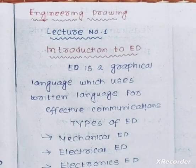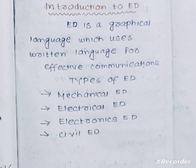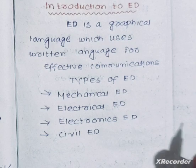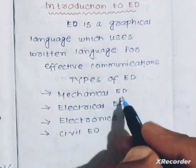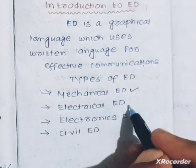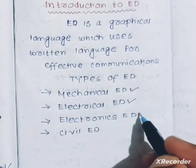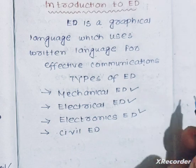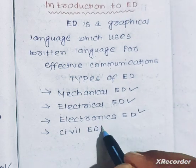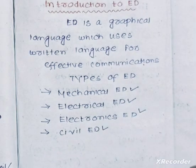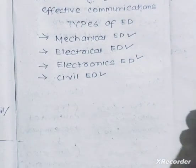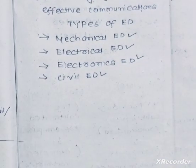Effective communication — types of engineering drawing. What is the basic engineering drawing? Mechanical engineering drawing, electrical engineering drawing, electronics engineering drawing, civil engineering drawing. These are the types of engineering drawing.